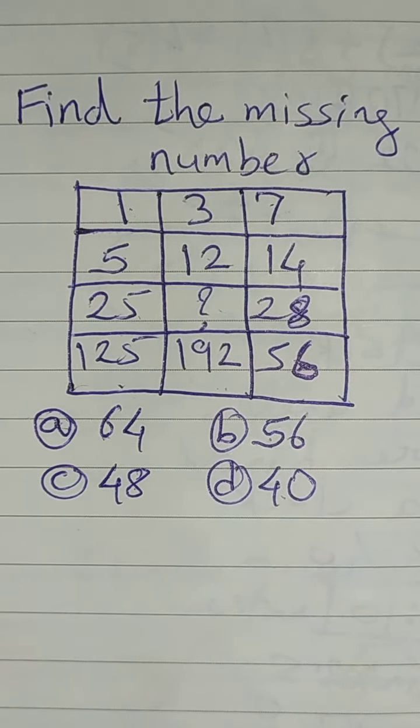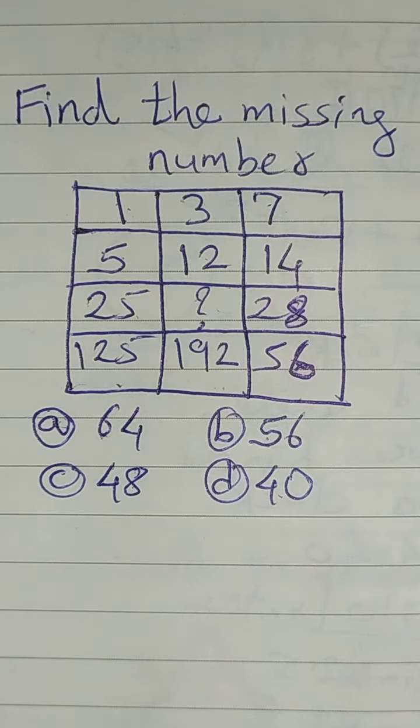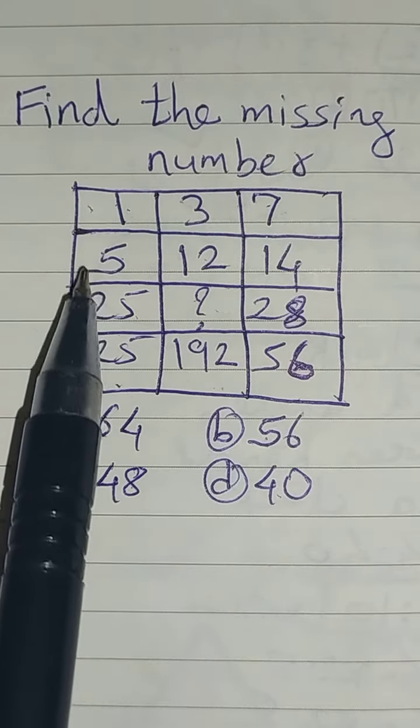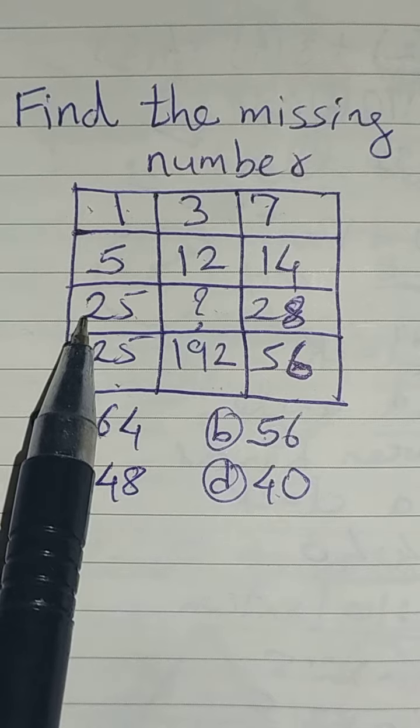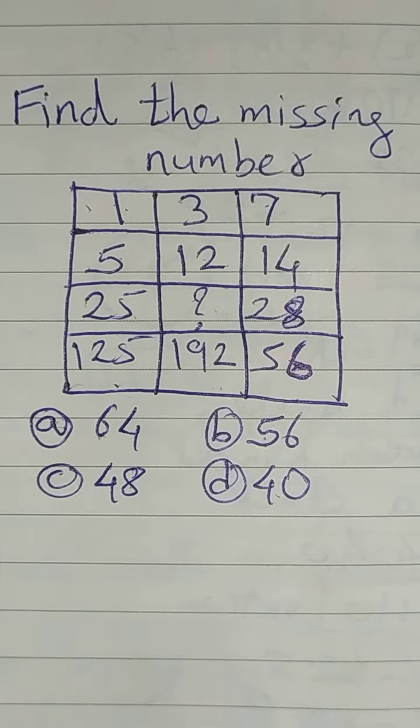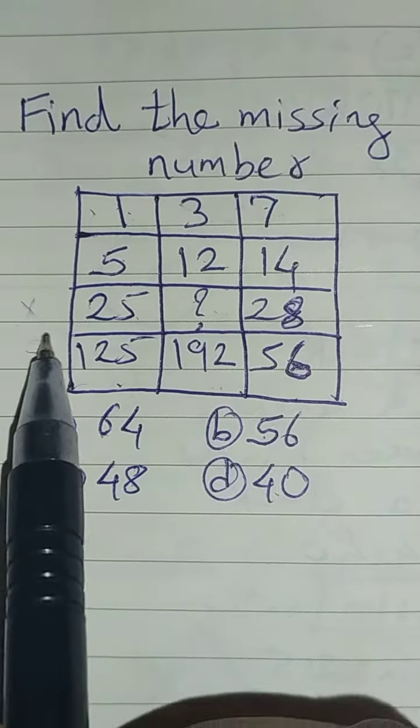You know the tables. So what is the clue that comes to your mind? 1 multiply by 5 is 5. 5 multiply by 5 is 25. 25 multiply by 5 is 125. So the first case is multiply by 5.